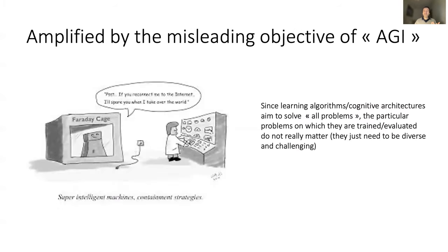This perspective has been amplified by the objective of building what some people call AGI — artificial general intelligence — taken by part of the community. In this context, since one wants to build machines that are universally good at all problems, this leads to considering the choice of the particular problems they are tested on as not really important. What matters is that they are quite diverse, but we don't look at which particular ones they are.